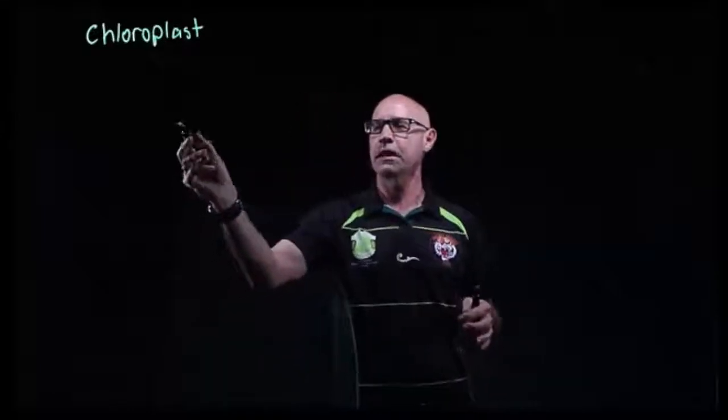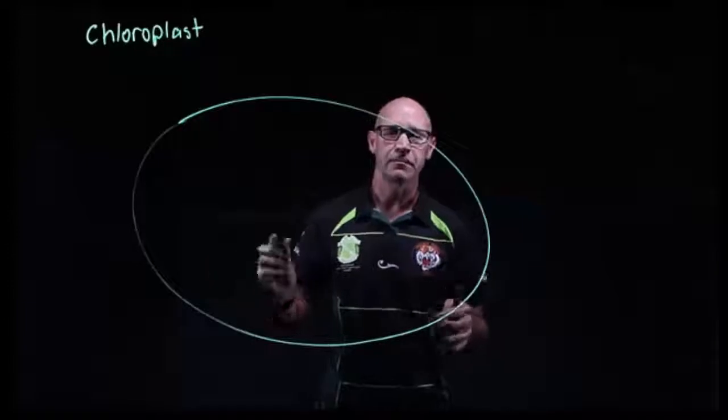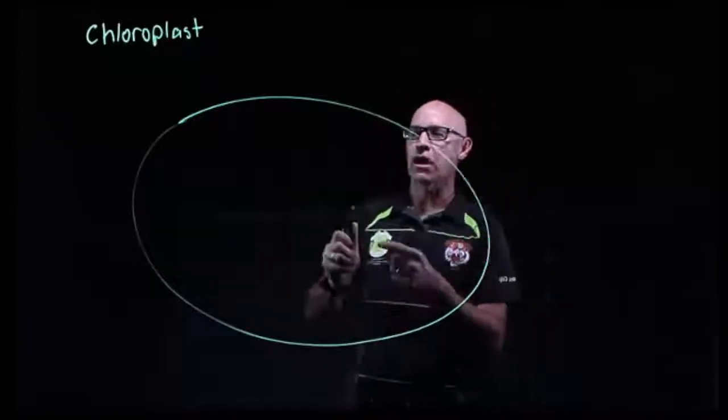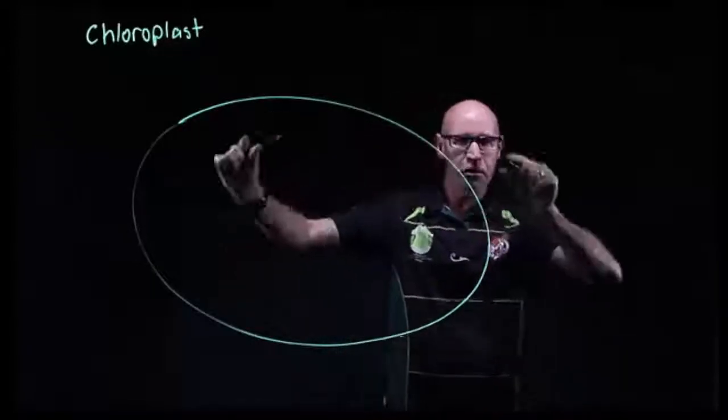In autotrophic eukaryotes, photosynthesis occurs in an organelle called the chloroplast. The chloroplast structure looks like this. First of all, it's got a dual membrane.